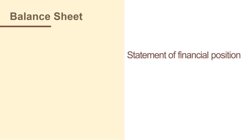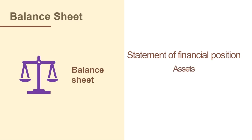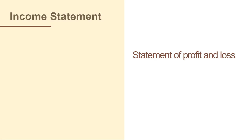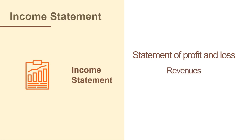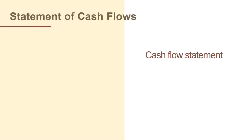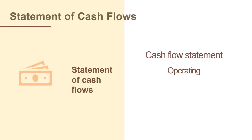The balance sheet is a statement of financial position. It reports the company's resources — its assets — and how those resources were funded — its liabilities and shareholder equity — on a particular date, which could be the end of a quarter or the end of a year. The income statement illustrates the operating performance of a company. It is a statement of profit or loss over a specific period of time, typically a quarter or a year. The cash flow statement is a required financial statement that provides insight the income statement cannot, specifically telling us exactly how much cash a company generates and from which activities.